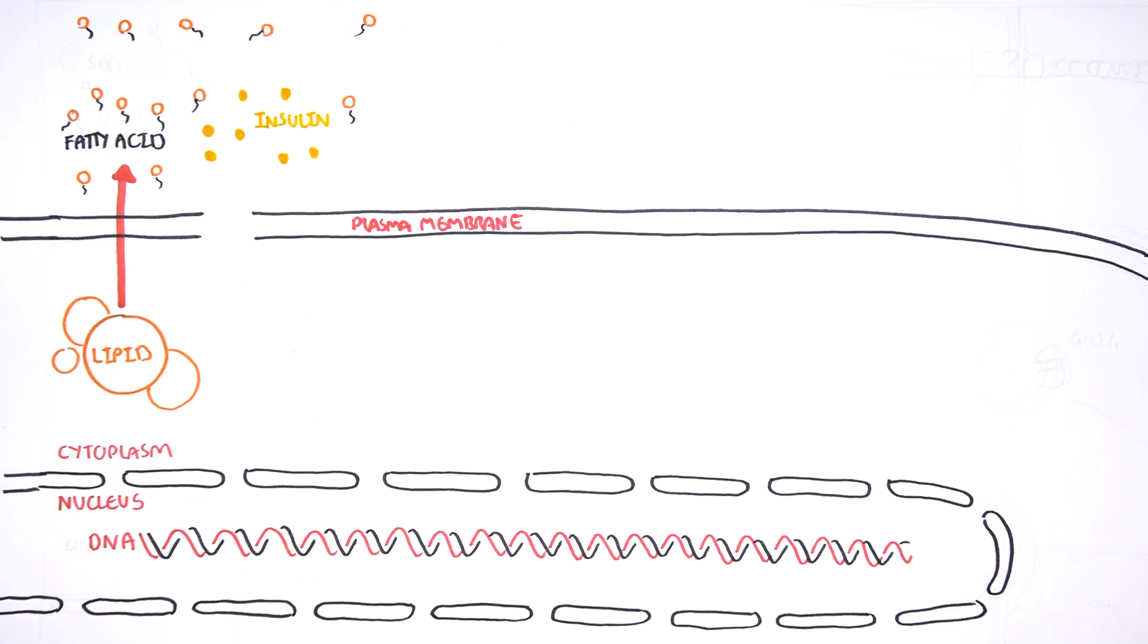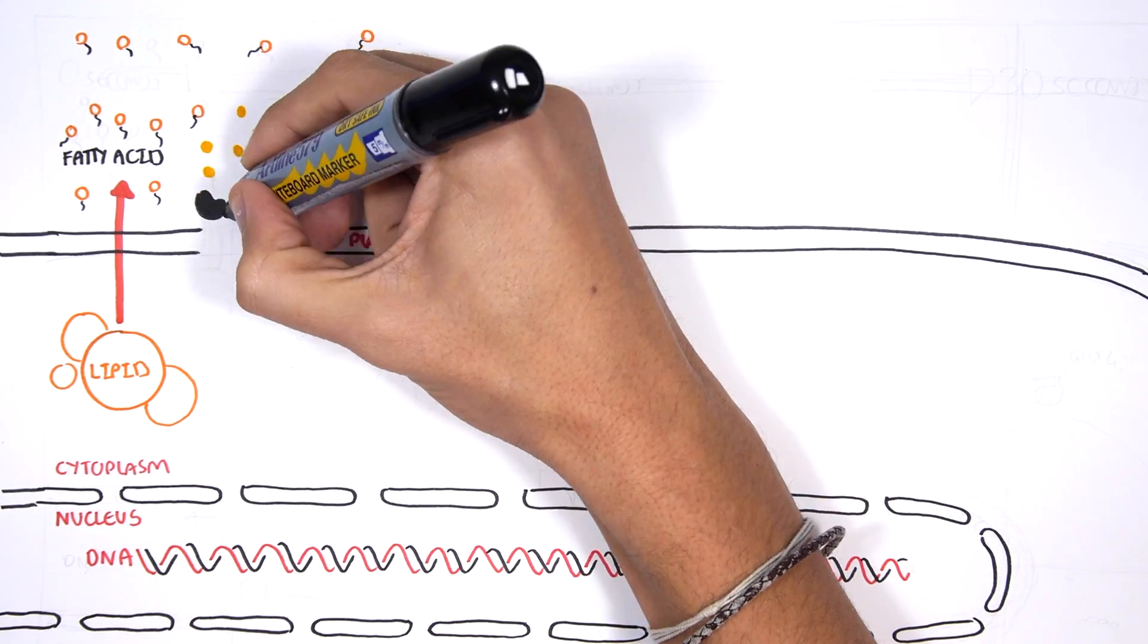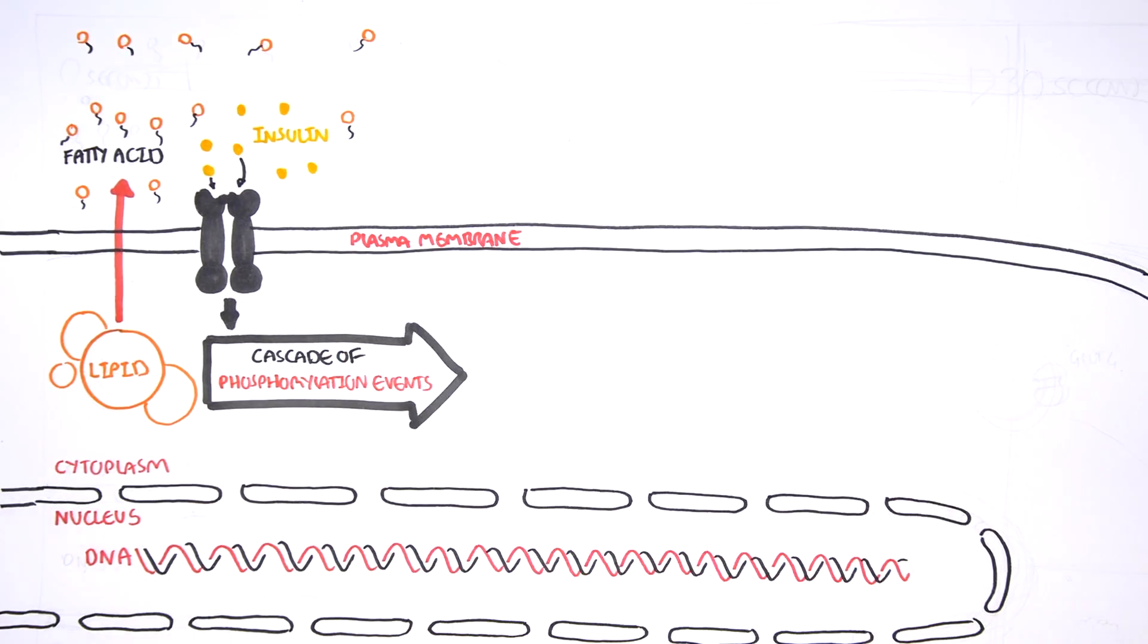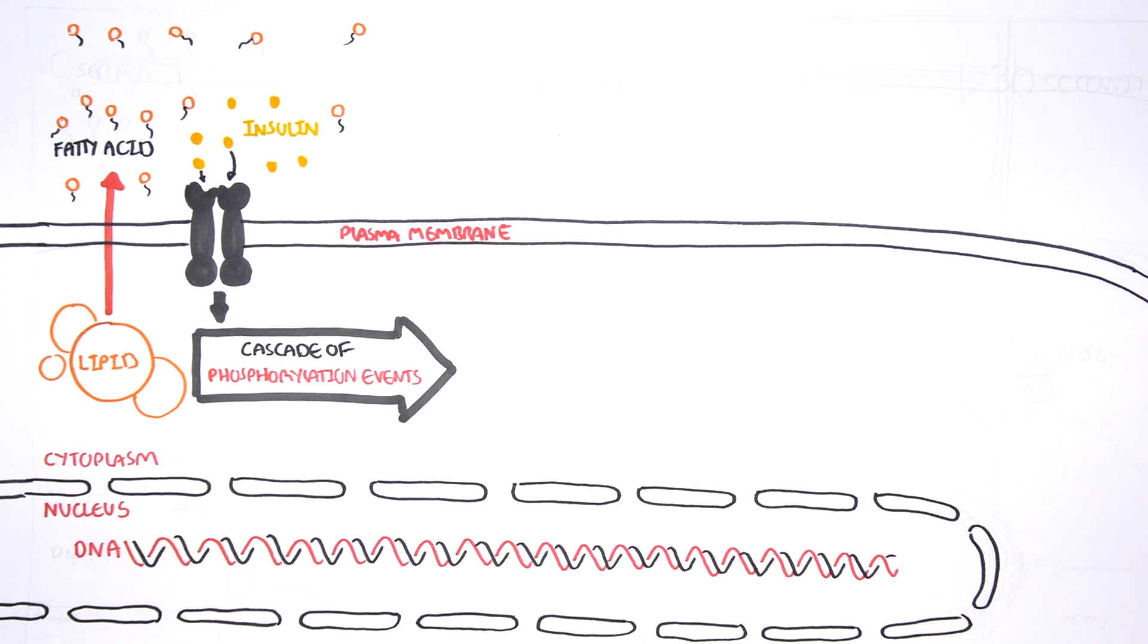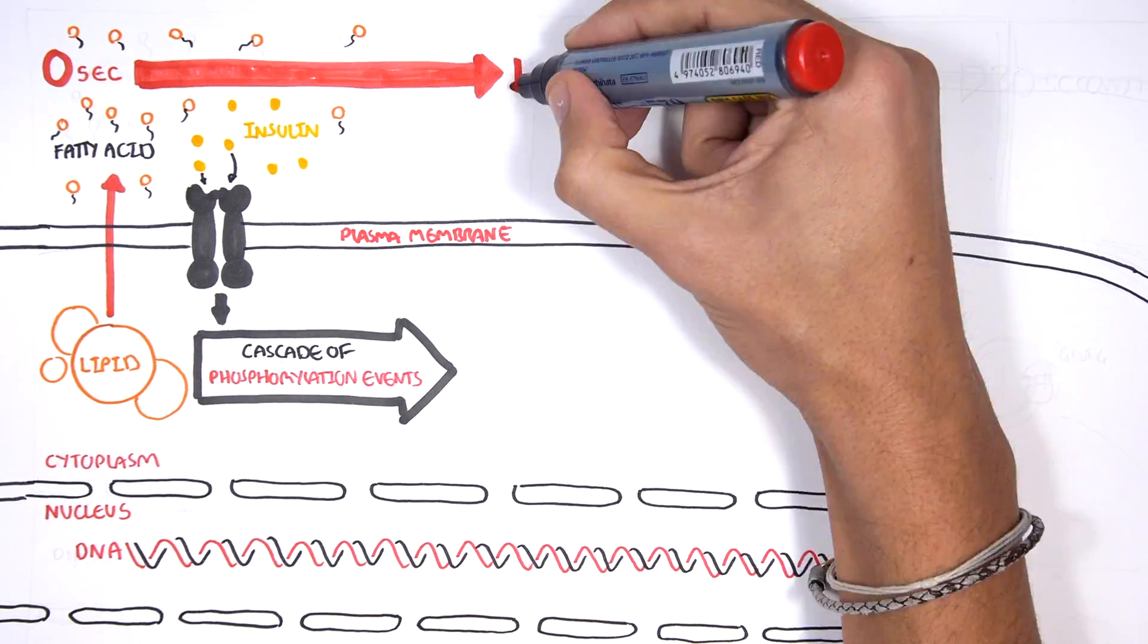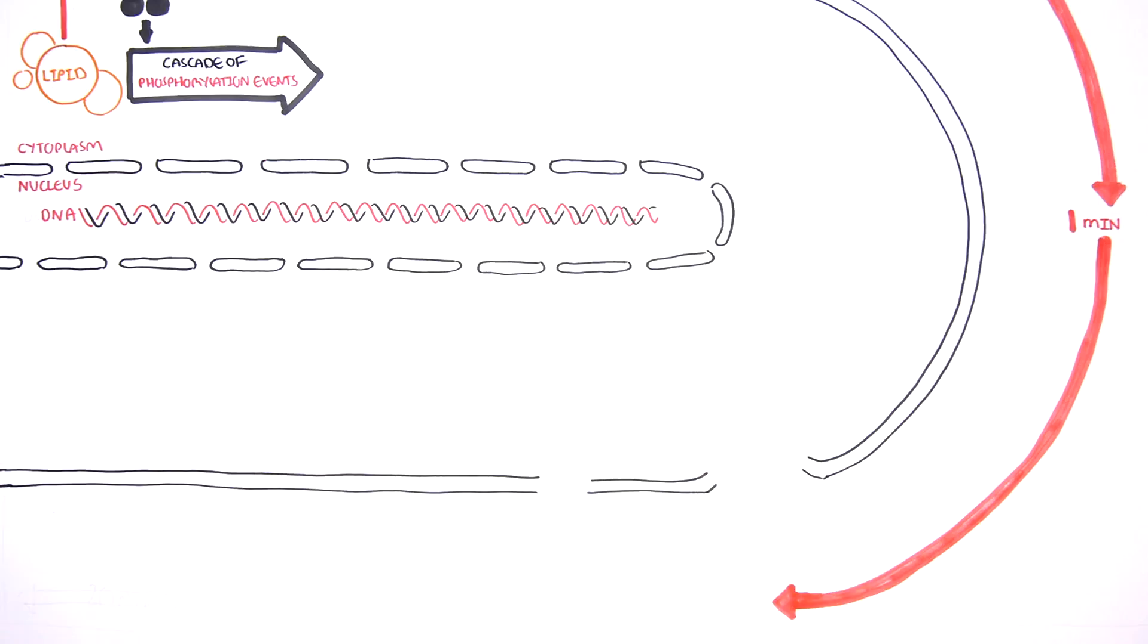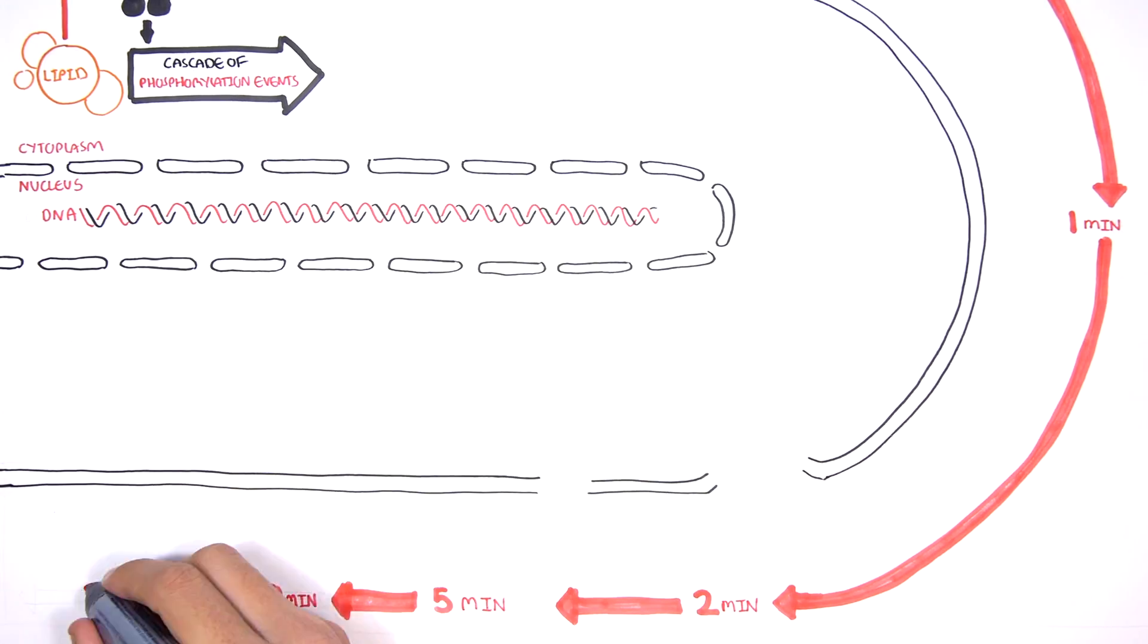After a meal, insulin is released and binds to insulin receptors on fat cells. This triggers a cascade of phosphorylation events inside the cell that leads to a number of outcomes occurring at different times. Here, we will look at a time frame from 0 seconds to 20 minutes following the binding of insulin to the insulin receptor.